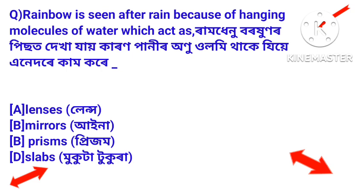Next question: rainbow is seen after rain because of hanging molecules of water which act as — ramdhenur borohunur pisat dekha jai karan pani onu ulumi thake ziyay enedore kame kore. Answer: mirrors — ayena hai panir onubure ayena dore kame kore.